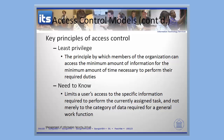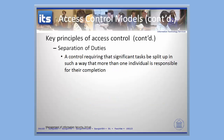The second principle is called need to know — you only need access to the information required to accomplish your task. If you don't need to know, there's no reason to share additional information. For example, do you need to know Johnny's password? Probably not. Some people may need the ability to override it, but not everyone. Make sure people have the information they need to do their job, but not access to information they don't need.